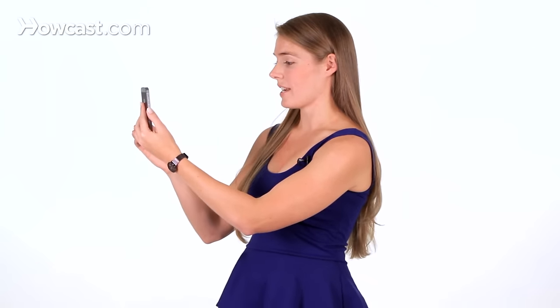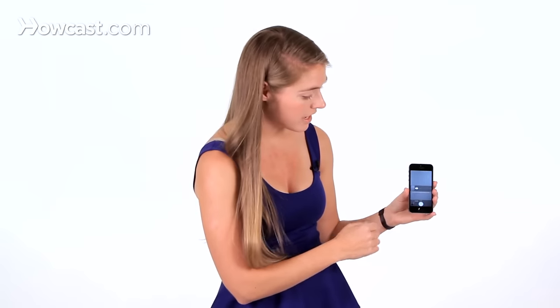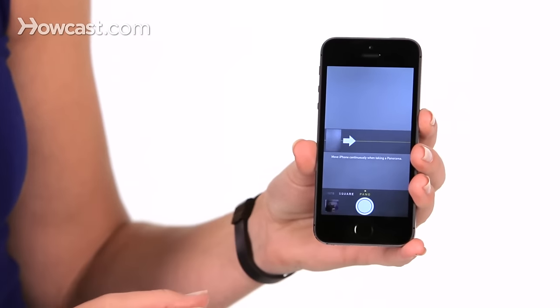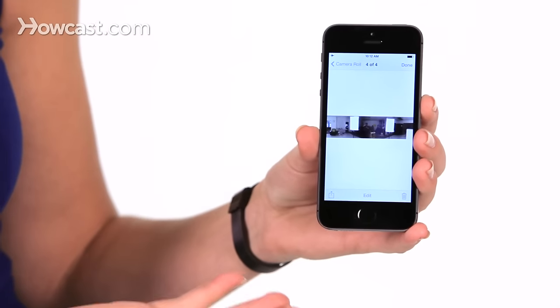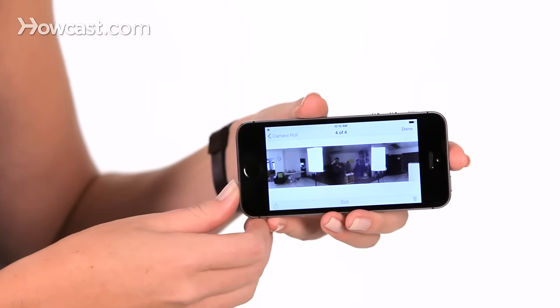Once you've gotten all the way to the right, you press the shutter again, and then you can view your picture by tapping on the bottom left hand corner where the camera roll is, and there it is. You can also rotate your phone to see it bigger. And that's how you take a panoramic picture.